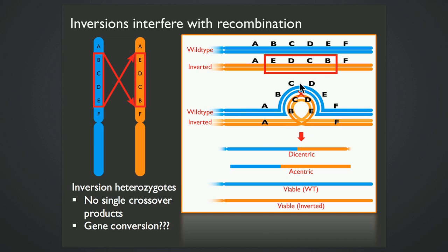If you have a single crossover within this inverted region, you're going to get dicentric and acentric products, so you will not recover single crossover products.